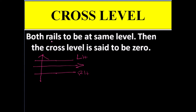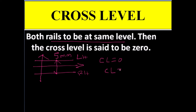If both rails are at the same level, the cross level is said to be zero. If the left rail is lower than the right rail by 5 mm, the cross level is said to be 5L — meaning 5 mm, left rail low. If the right rail is lower than the left rail by 10 mm, the cross level is said to be 10R. So cross level is a relative measurement, not a separate one.